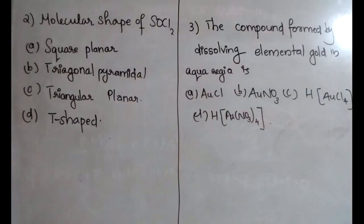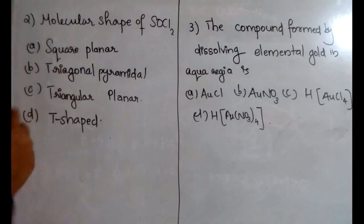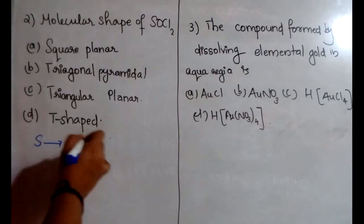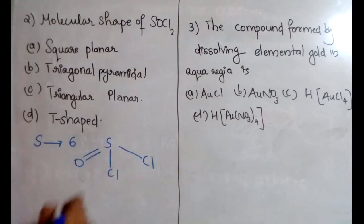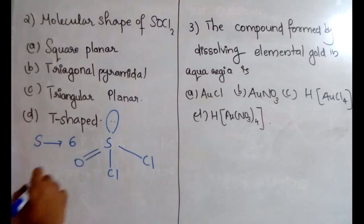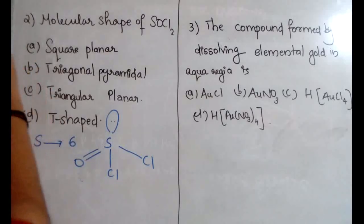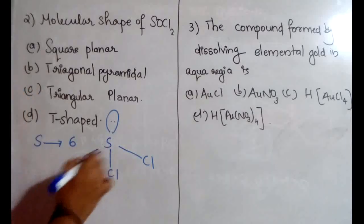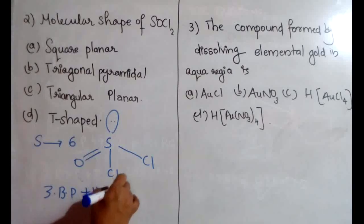The second question asks for the molecular shape of SOCl₂. I have already discussed a shortcut method to find shape and hybridization — the link will be in the description. Sulfur has six valence electrons: two are given to oxygen, one to each chlorine. Considering only sigma bonds as bond pairs, we get three bond pairs plus one lone pair.